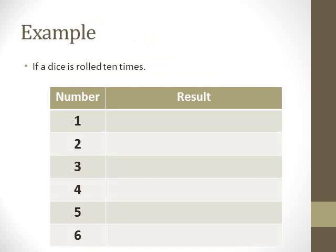If a dice is rolled ten times, there are several outcomes — we can have one, two, three, four, five, or six. Let's suppose in your first attempt you got one. So you just need to mark one tally in the result of one — you recorded that data, showing that in your first attempt you got one, one time. In your second attempt if you get three, you will just mark one tally in the three column.